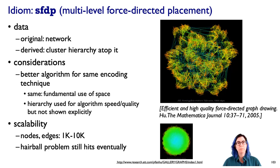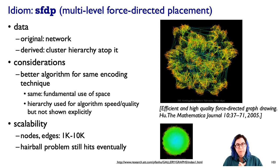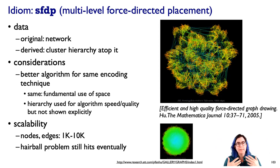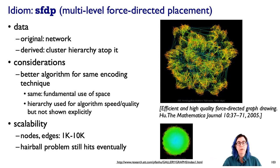SFTP is a particular algorithm for multi-level force-directed placement. It takes the nodes of the original network and constructs a cluster hierarchy — a tree — grouping topologically nearby nodes into meta-nodes, and those into further meta-nodes, creating a hierarchical structure. This is designed to speed up computation. The encoding remains the same as standard node-link, but the cluster hierarchy is not explicitly shown; it's used purely to accelerate computation.